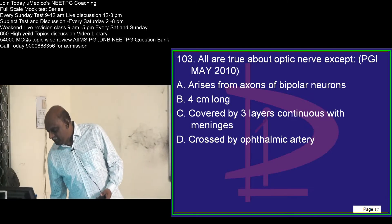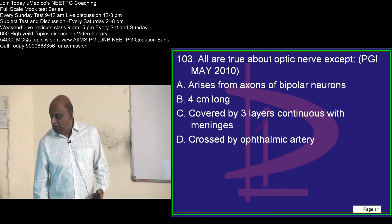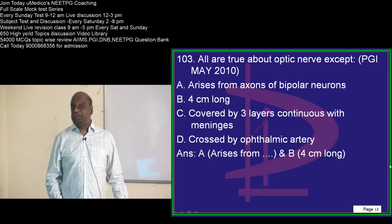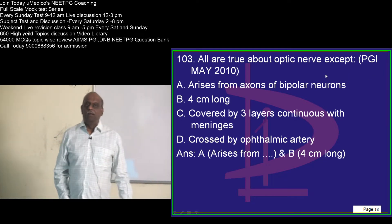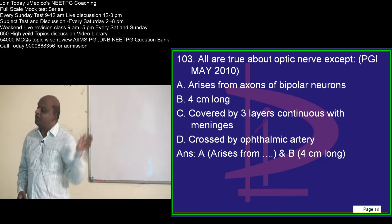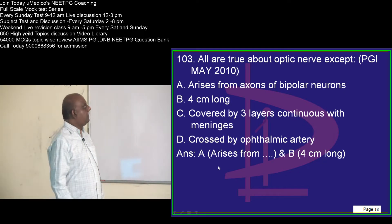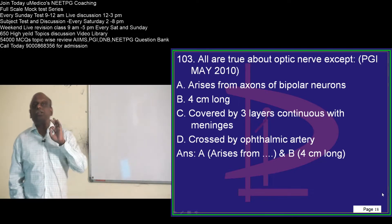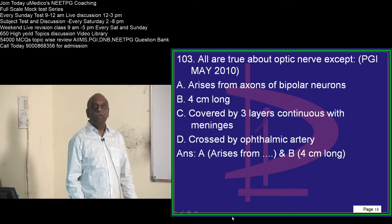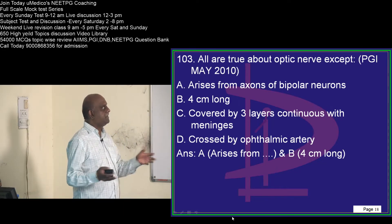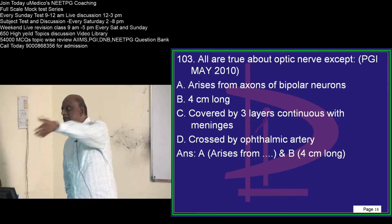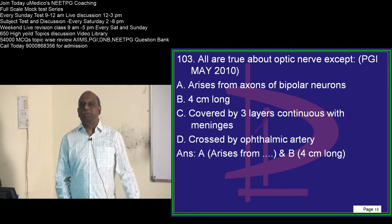Optic nerve — let us be very sure about this. From where does the optic nerve arise? Yesterday we discussed what constitutes the first order neurons, second order neurons, and third order neurons in the visual pathway. The bipolar neurons' axons constitute the optic nerve is wrong, because it is the ganglion cells which are the second order neurons. So it is the ganglion cells from where the optic nerve starts, not the bipolar.